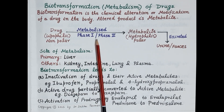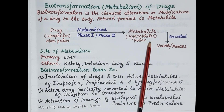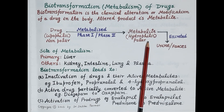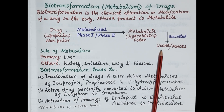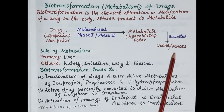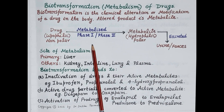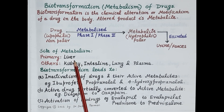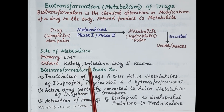Biotransformation reactions are reactions where lipophilic, lipid soluble drugs are metabolized and converted into water soluble or hydrophilic derivatives, which are termed as metabolites. These metabolites are more water soluble and are easily excreted from the body, primarily in the urine or in the feces. Biotransformation reactions are of two types: phase one reactions and phase two reactions. Drugs are primarily metabolized in the liver, as the liver is the main organ of metabolism.